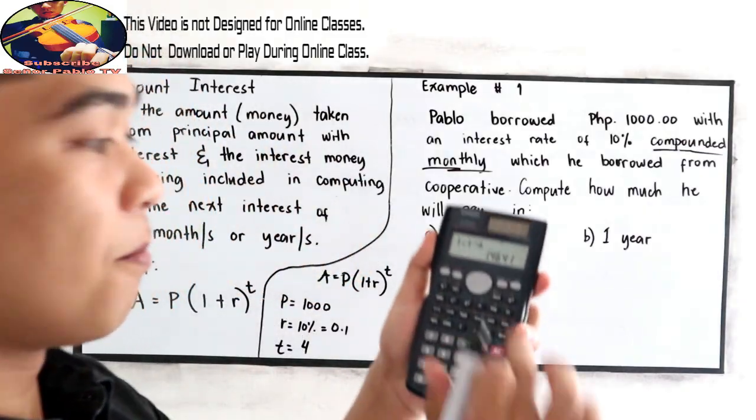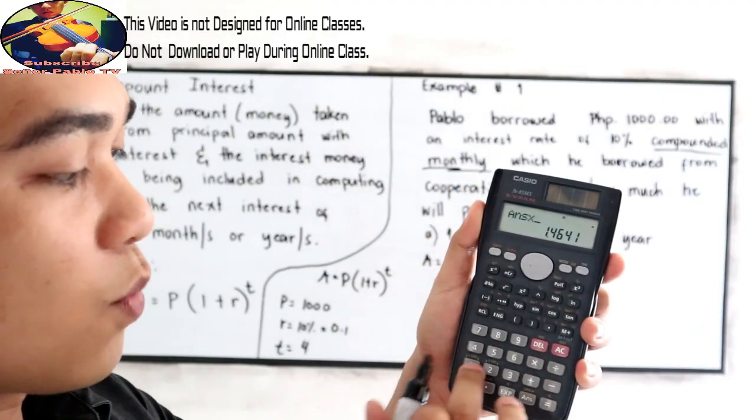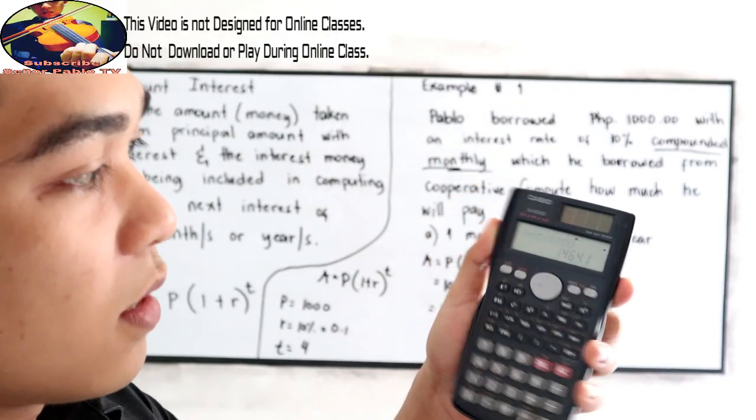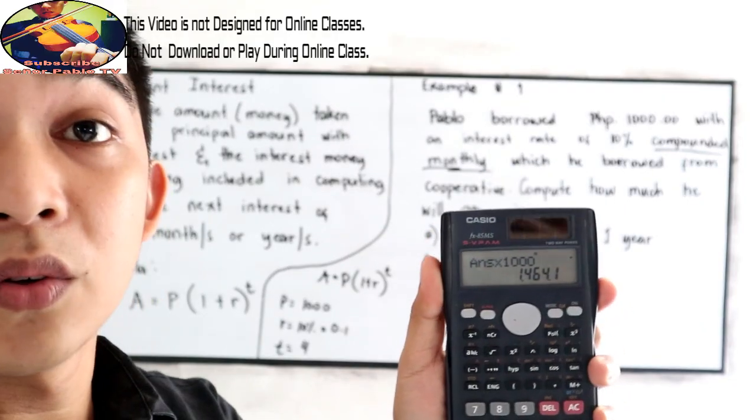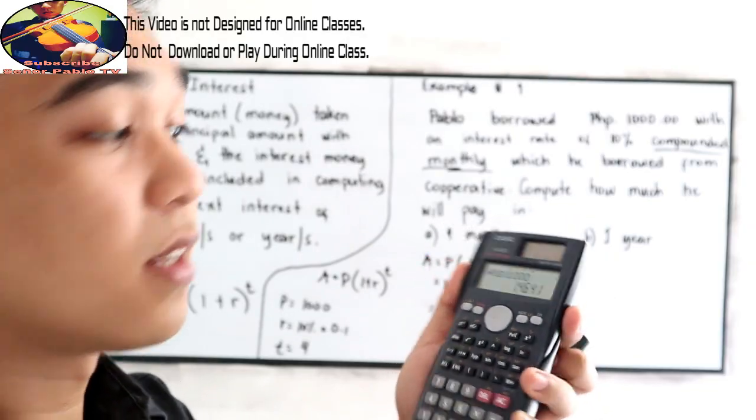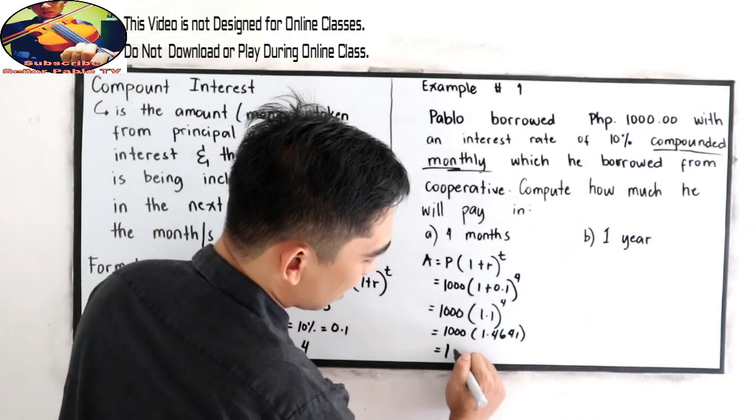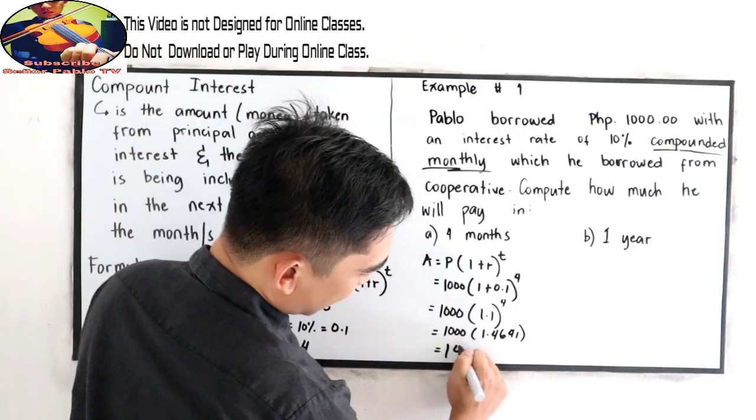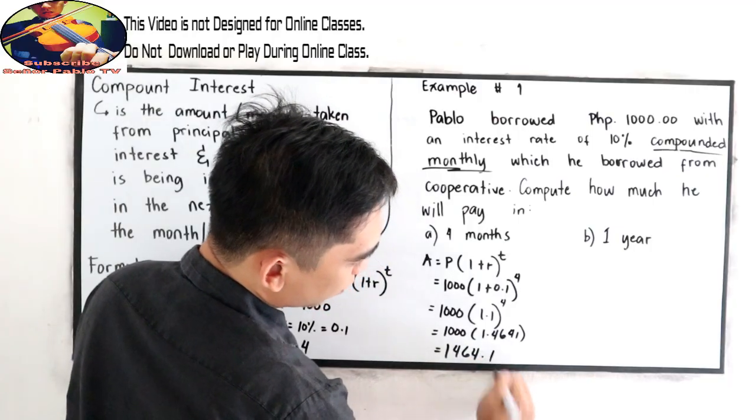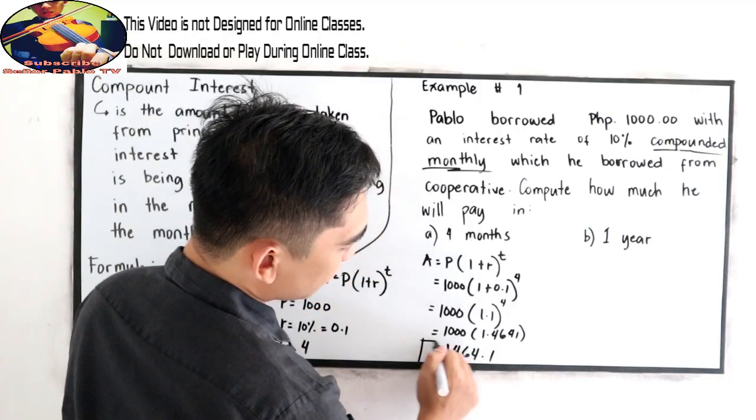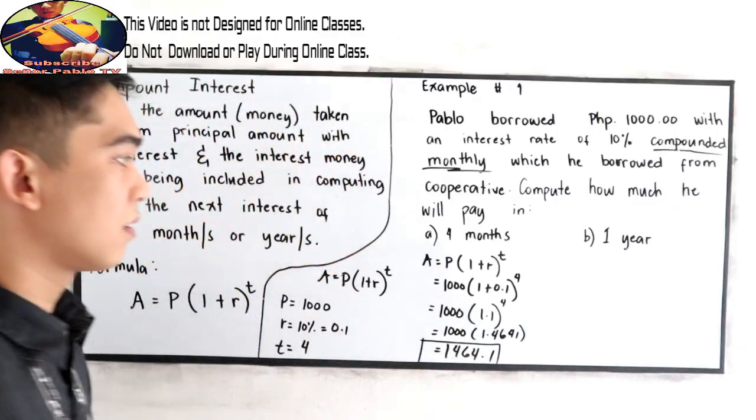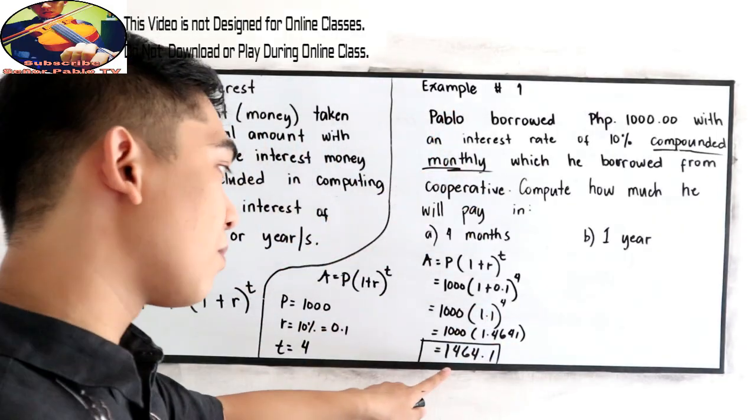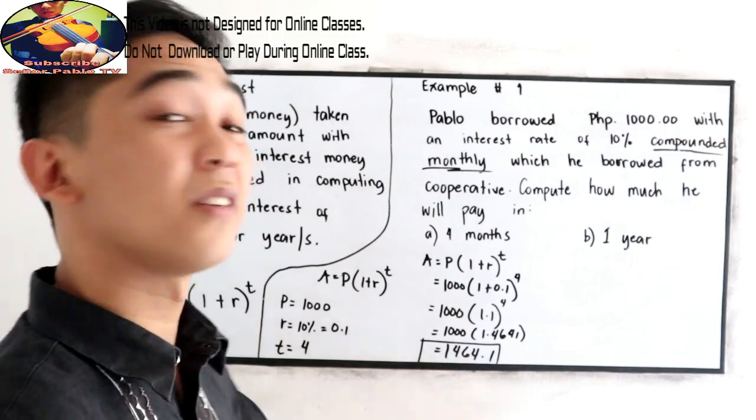So the amount of money will become 1,464.1. So after 4 months, 1,000 will become 1,464.